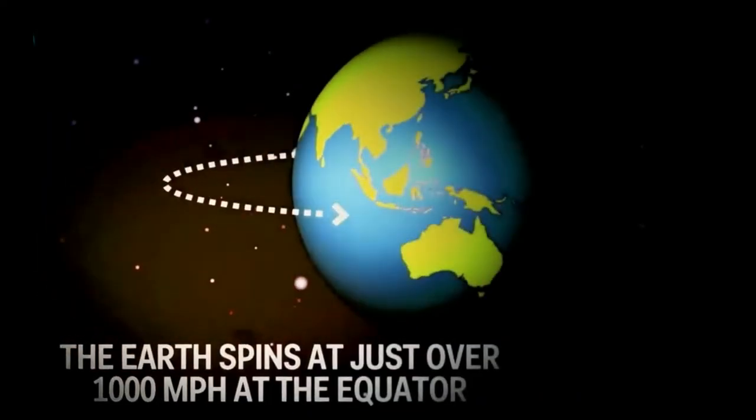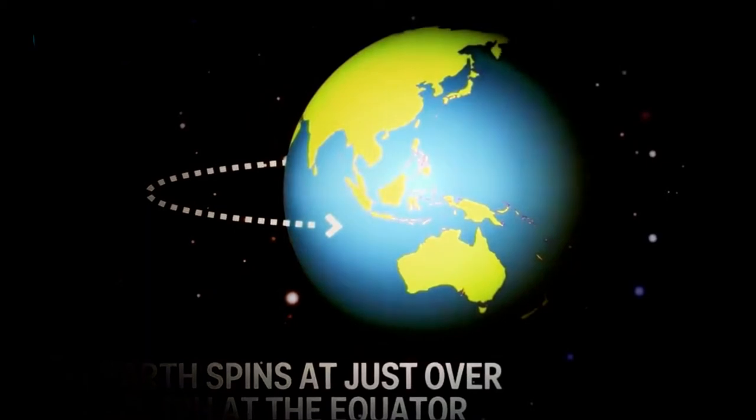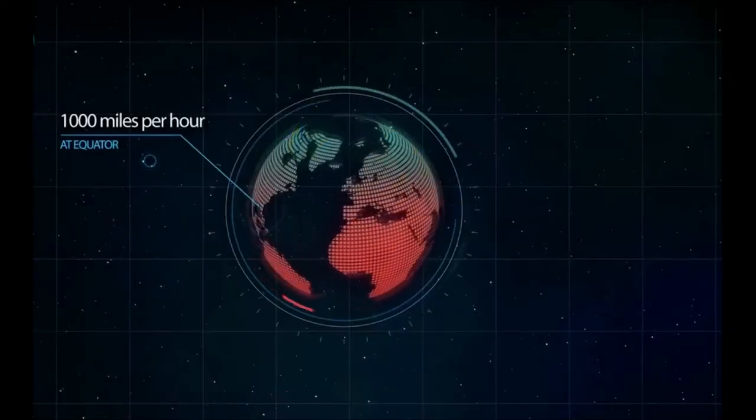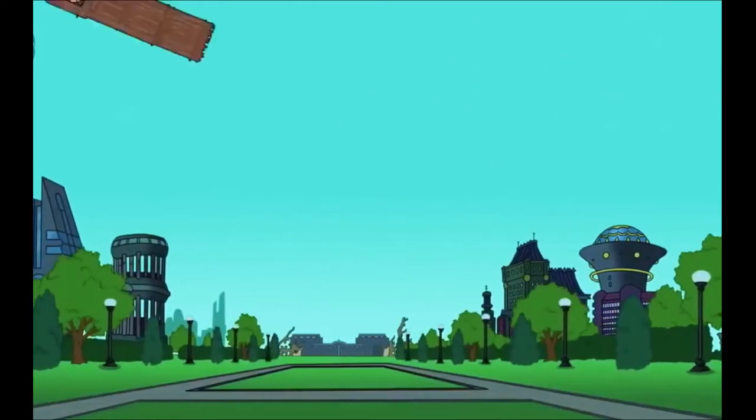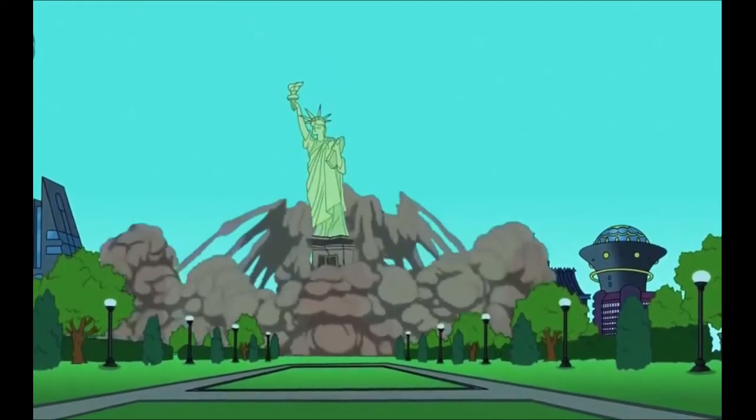First of all, we have to consider the speed at which our planet rotates at the equator, which is roughly 1,000 miles per hour. A sudden pause would cause everything on the surface of the Earth to suddenly move at a speed of over 1,000 miles per hour, 1,600 kilometers per hour, in a sideways direction.